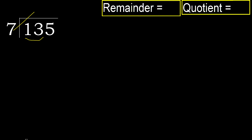but not greater. 7 multiplied by 2 is 14 — 14 is greater. 7 multiplied by 1 is 7. 7 is not greater. 13 minus 7 is 6. Next.